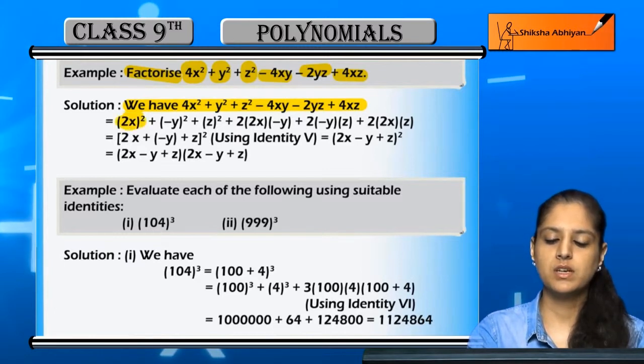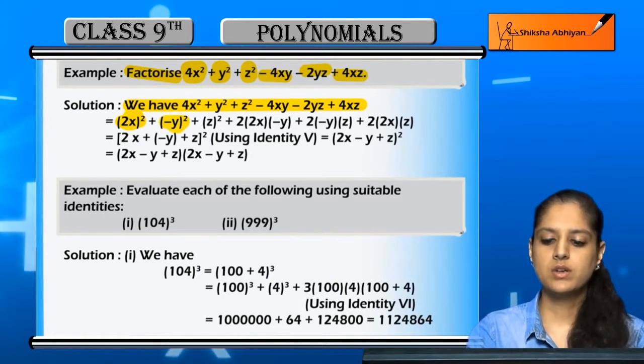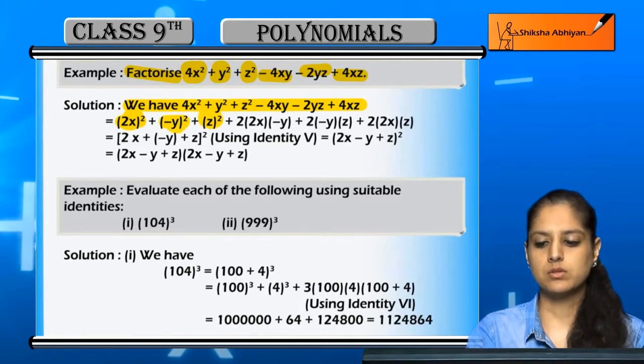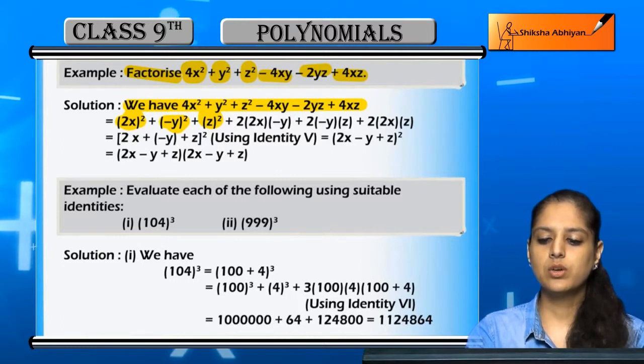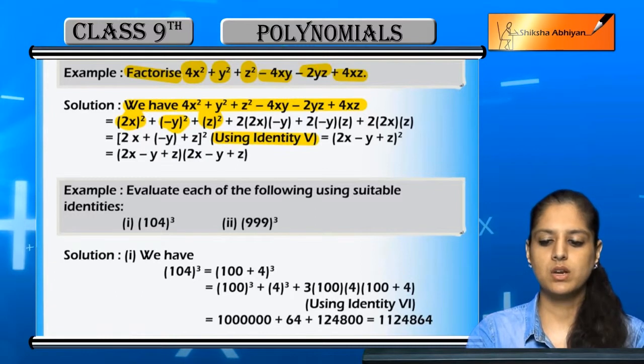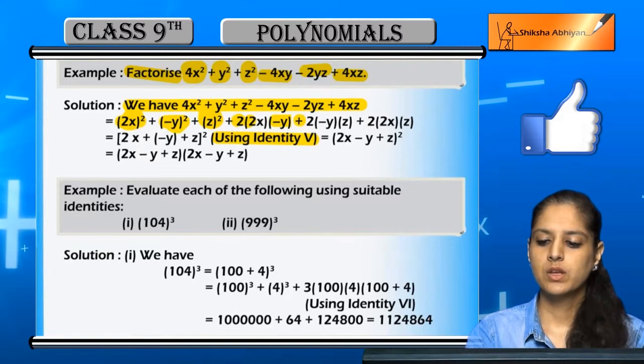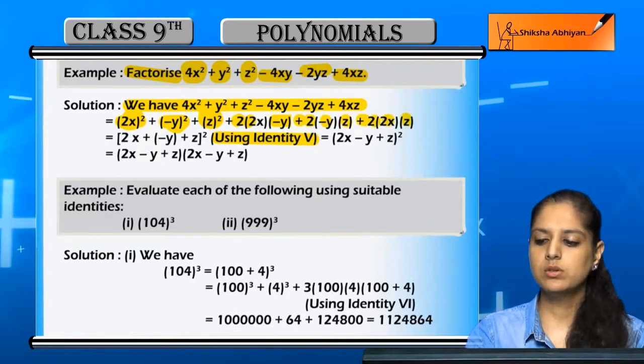We can write 4x² as (2x)² whole square, y² as (-y)² whole square, and z² as z² whole square. Using the fifth identity, the remaining terms can be written as 2 times first term times second term, that is 2x times -y, plus 2 times second term times third term, plus 2 times third term times first term.